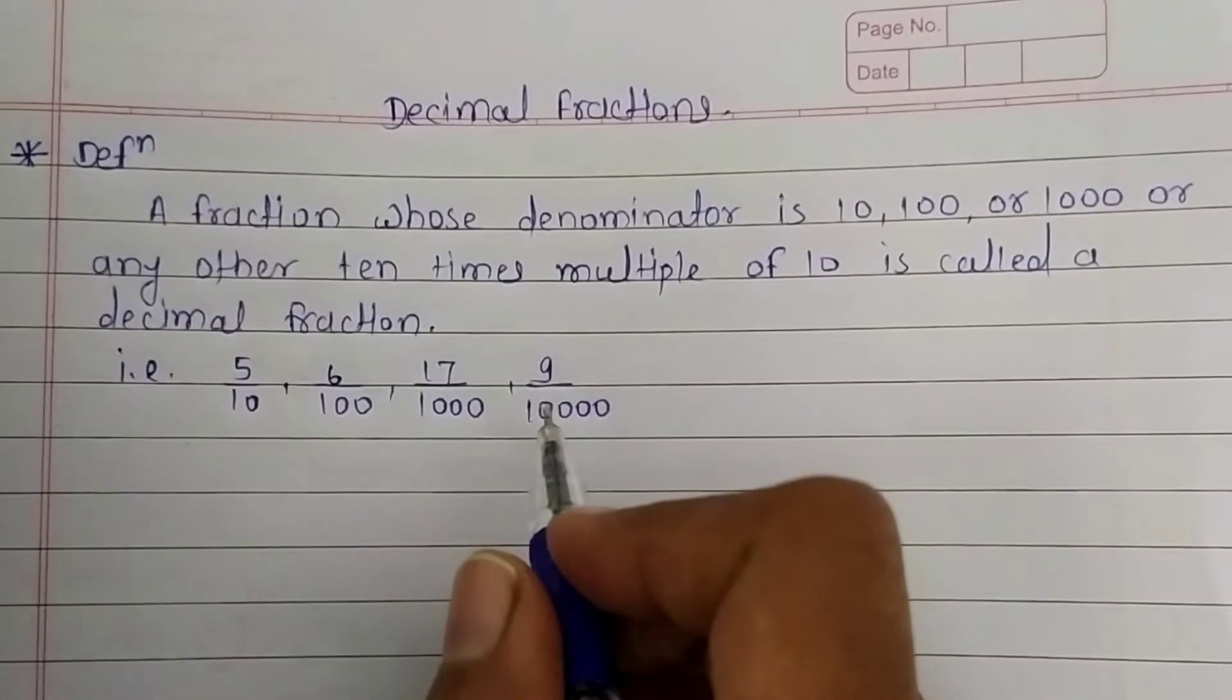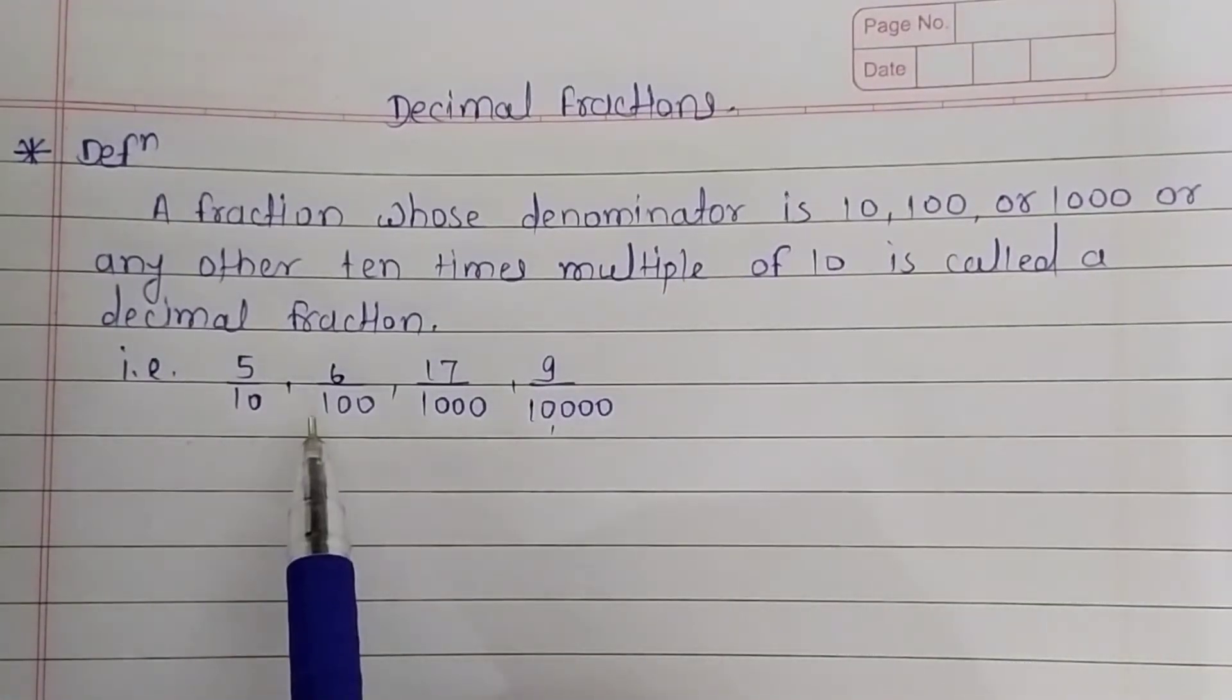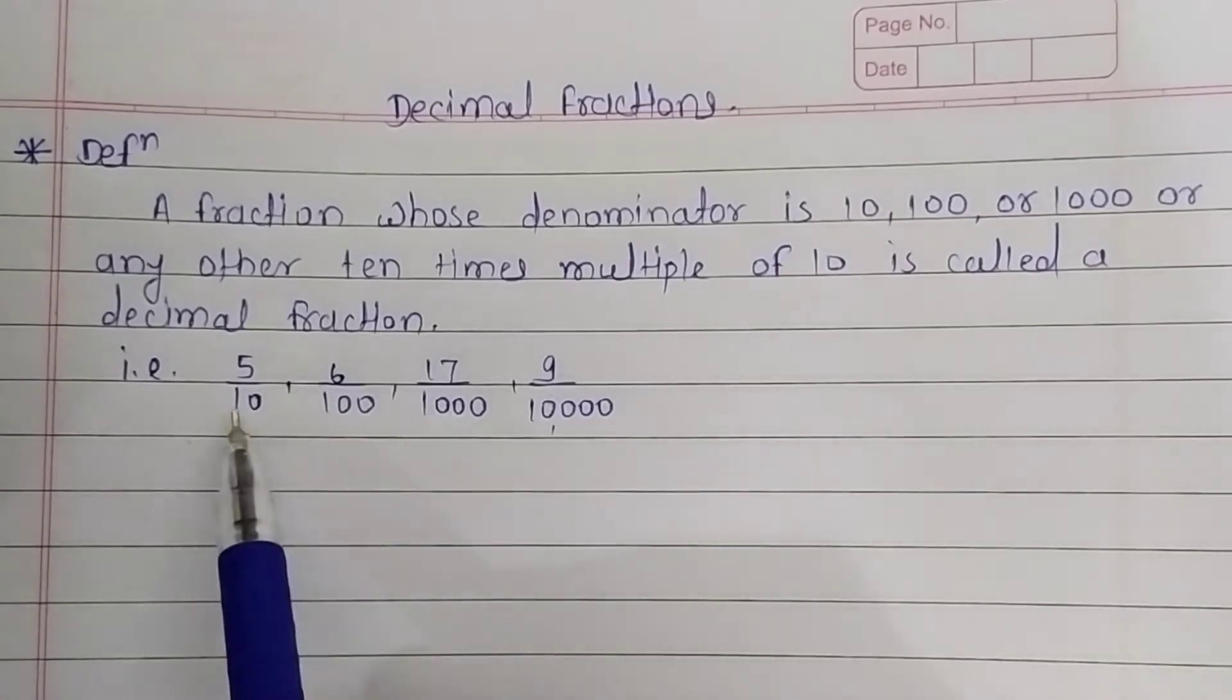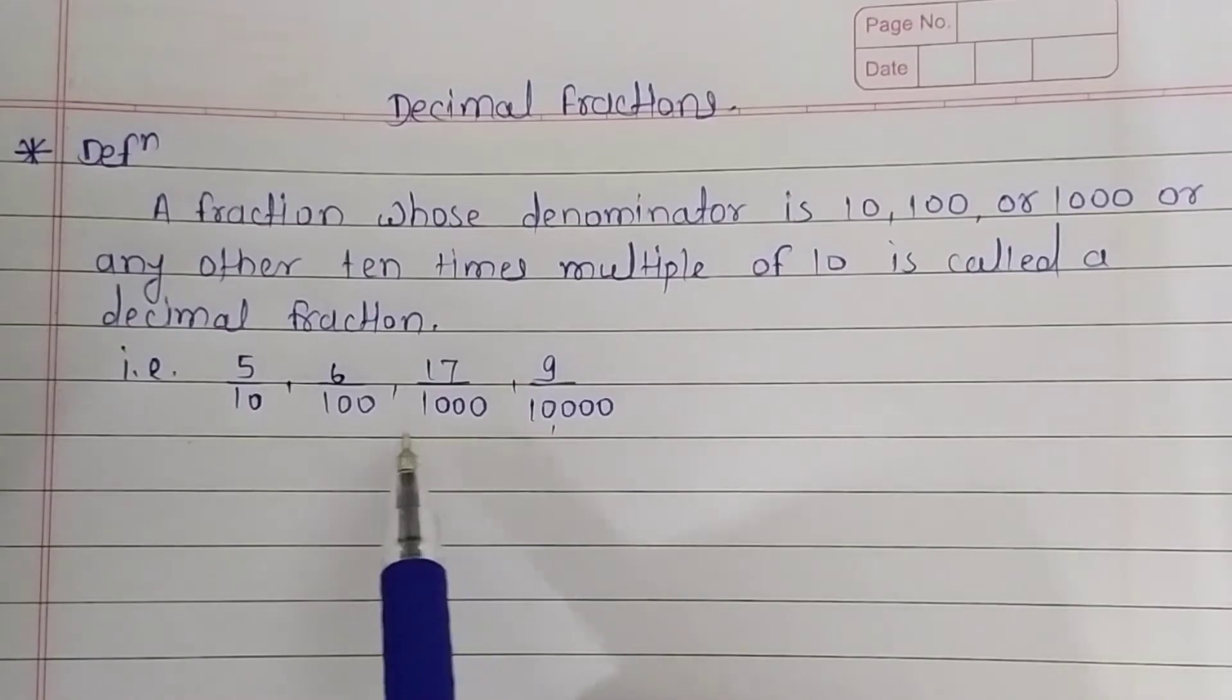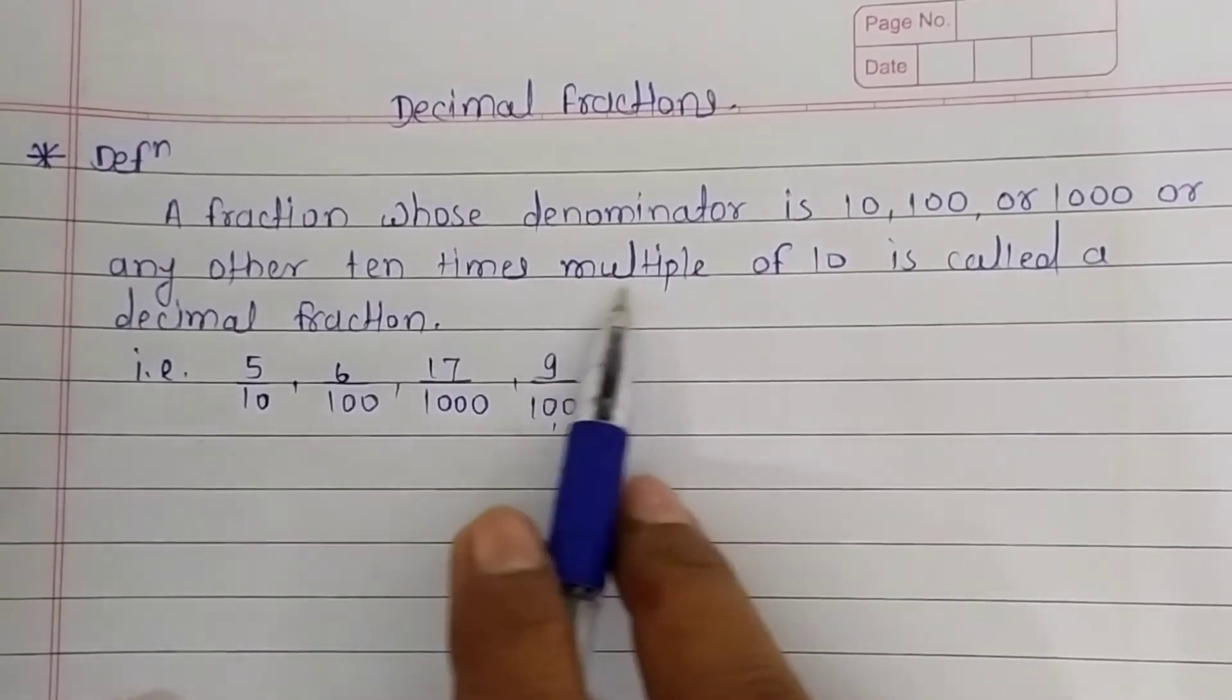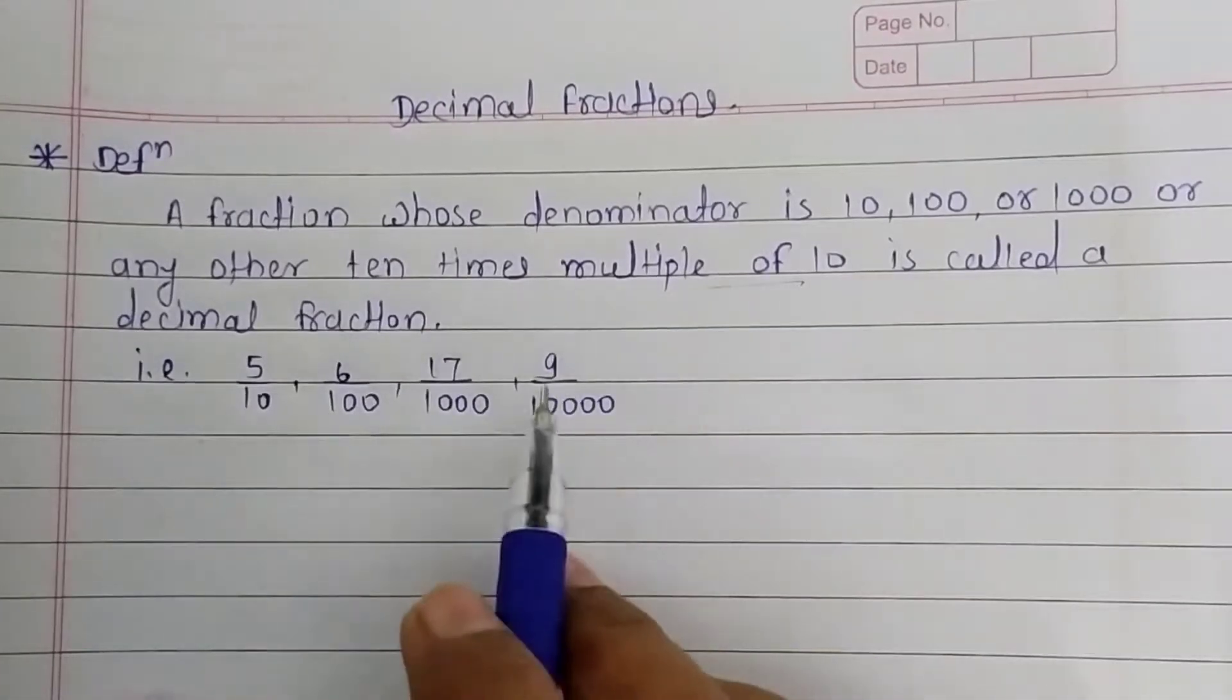It means this fraction has a denominator 10 or multiples of 10: 10, 100, 1000, and so on. It's a multiple of 10. It's called a decimal fraction.